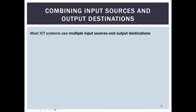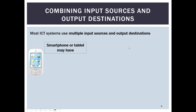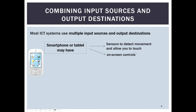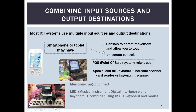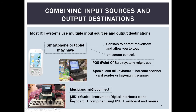Most ICT systems use multiple input sources and output destinations. A smartphone or tablet may have sensors to detect movement and allow touch, as well as on-screen controls. A point-of-sale system has a specialized till keyboard, barcode scanner, card reader, or fingerprint scanner — multiple input sources. Musicians might connect a MIDI piano keyboard to a computer via USB alongside a keyboard and mouse.